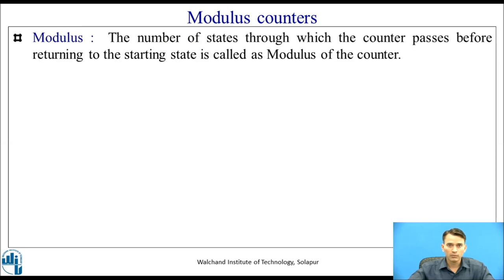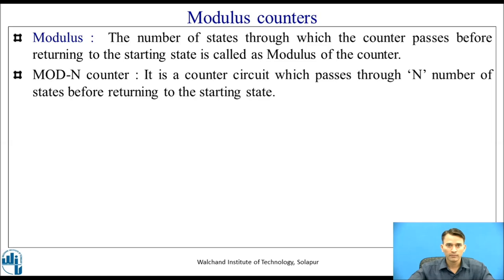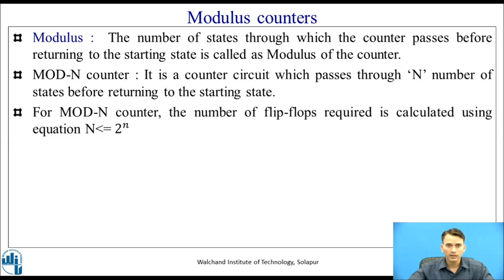The number of states through which the counter passes before returning to the starting state is called the modulus of the counter. A Mod-N counter is a counter circuit which passes through N number of states before returning to the starting state. For a Mod-N counter, the number of flip-flops required is calculated using the equation N ≤ 2^n.